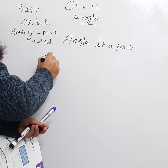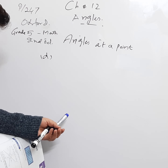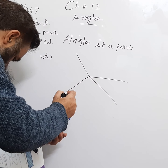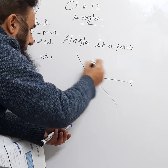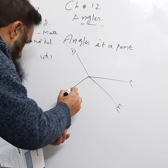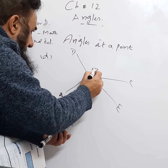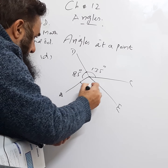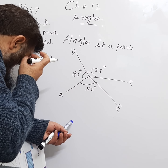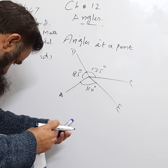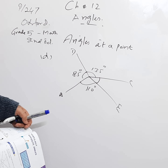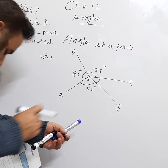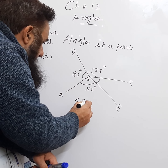We now do the last part, which is d. There is another diagram with points labeled a, b, c, d, and e. The known angles are 135°, 45°, 85°, and 110°. We need to find the angle EBC, which we will call x.